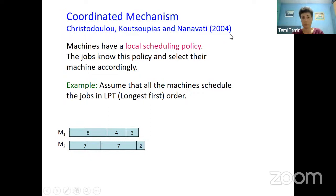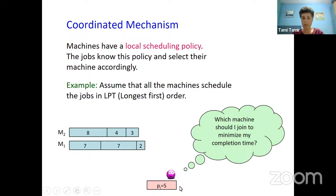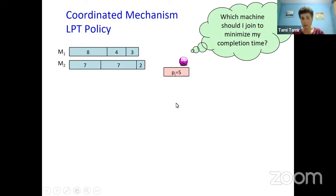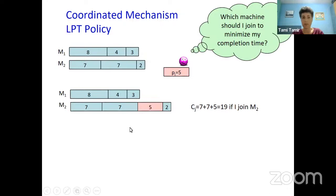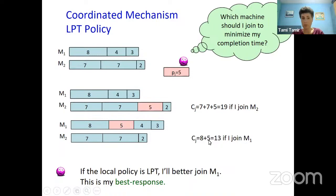One specific class of job scheduling games we are going to discuss today is denoted coordinated mechanism, suggested almost 20 years ago. In a coordinated mechanism, machines have a local scheduling policy; the jobs know this policy and every job selects its machine accordingly. For example, assume all machines schedule jobs in LPT order — longest jobs first. A job with processing time 5 would ask which machine to join to minimize its completion time. If it joins the second machine, its completion time would be 19; if it joins the first machine, 13. So it should join the first machine.